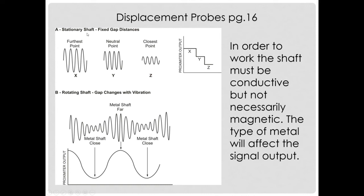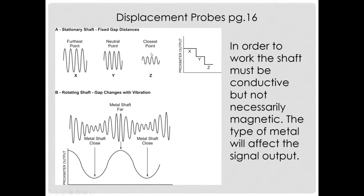For displacement probes to work, the shaft must be conductive but not necessarily magnetic. The type of metal will affect the signal output. If you're working on a vibration system on a compressor and they change out the crankshaft to one of different metal, it's going to change the measurement value. The amplitudes will change, so you want to be aware of that effect. The signal relationship is: larger amplitudes occur with larger gaps and smaller amplitudes with smaller gaps.